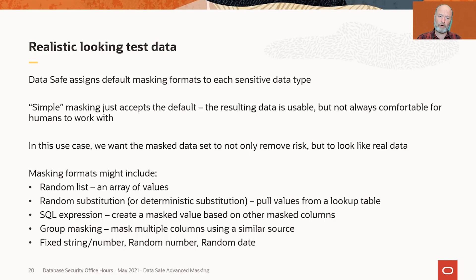There are other masking formats you'll use to produce realistic looking test data — things like fixed strings or numbers, random numbers where you adjust the scope to something that makes sense, and random dates where you adjust the range. These are all ways to produce more realistic looking test data.